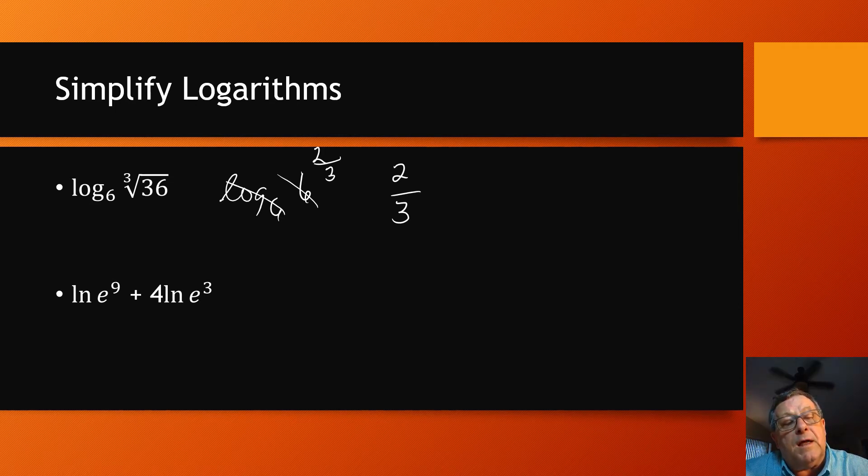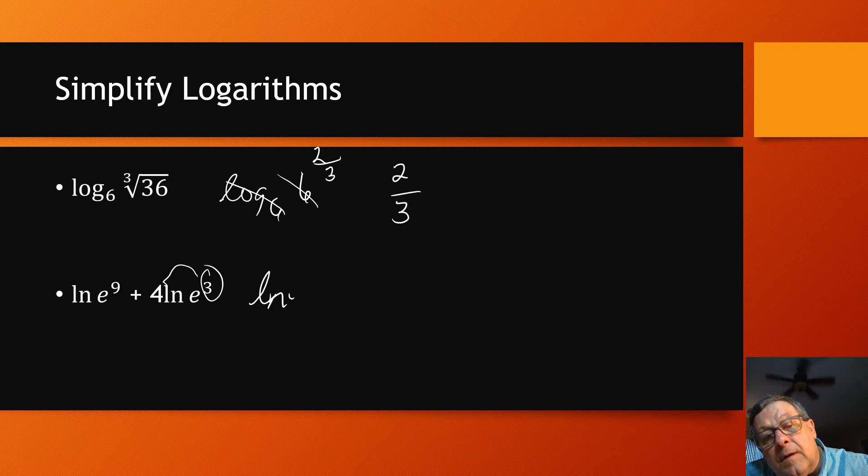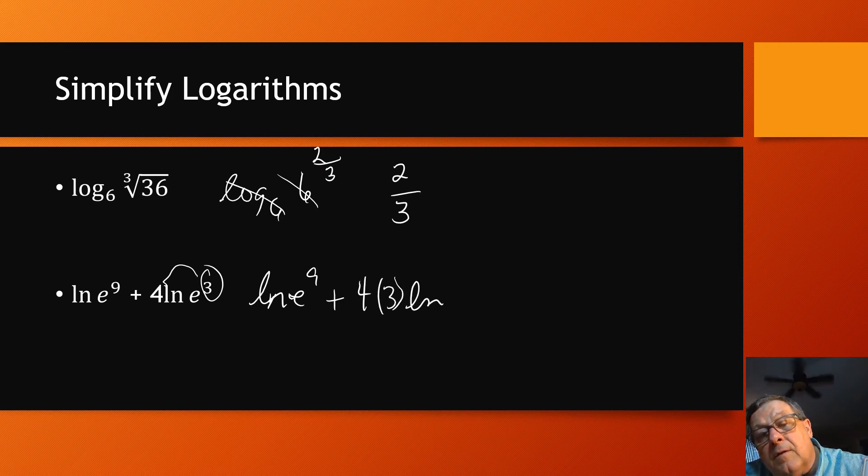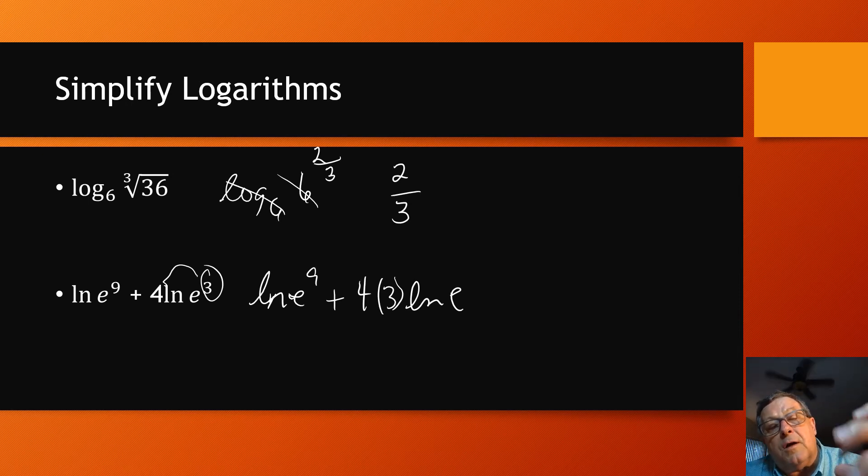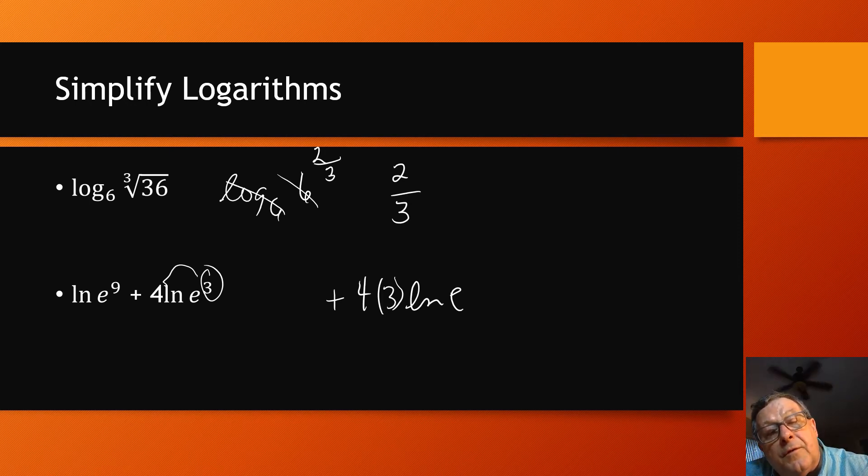Before I cancel out the LNs and the E, let me move this exponent out front using the power property. So then I've got LN E to the 9th power plus 4 times 3 LN E. Well, I could move that 9 out too. Maybe I should. Let me do that. Probably should. So I could write this as 9 LN E.